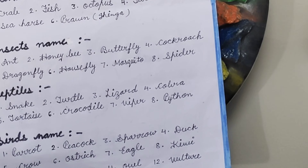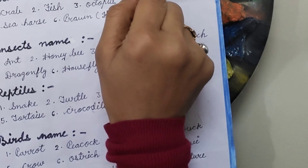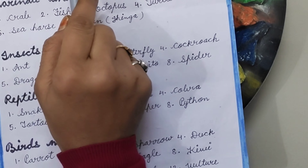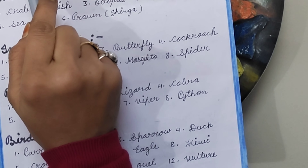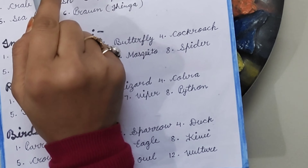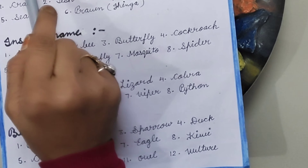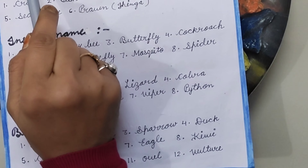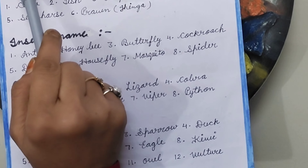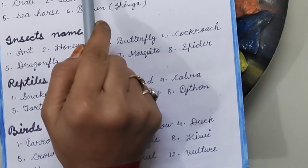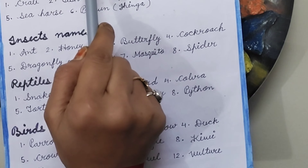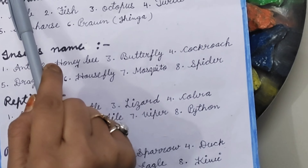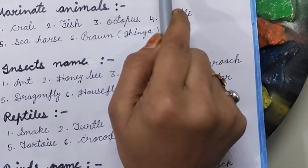Reptiles — animals that move by crawling. Snake, Turtle, Lizard, Cobra, Tortoise, Crocodile, Viper, Python.